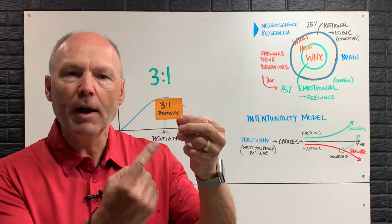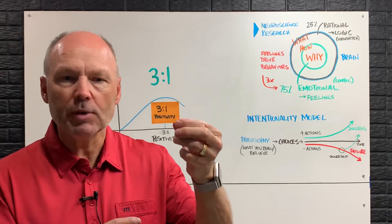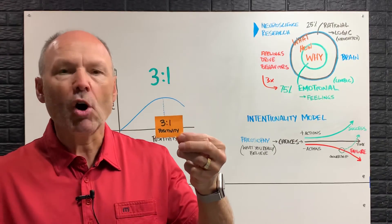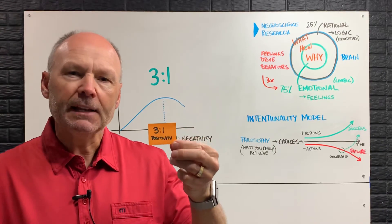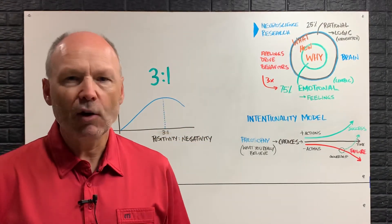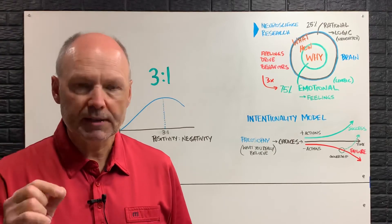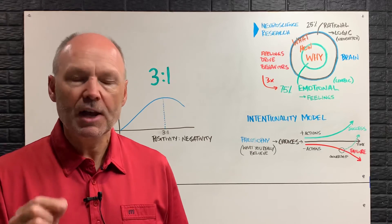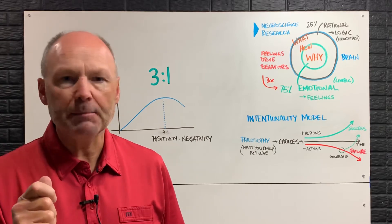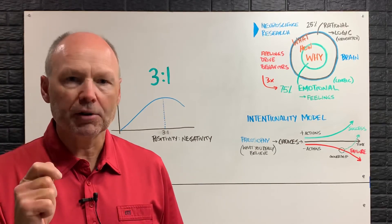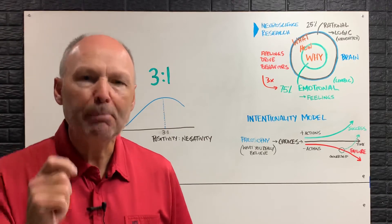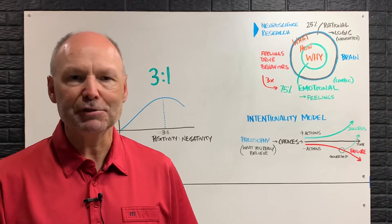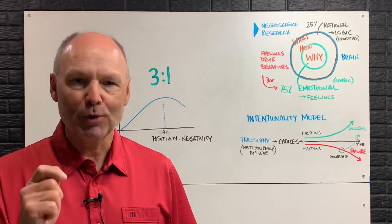Put 3 to 1 positivity on a post-it note and put that by your desk along with the E plus R equals O and along with the other one that I also suggested around grit and how perseverance and passion and resilience will get us through this in better shape and allow us to come out stronger. So today, be positive for yourself, be positive for your family, be positive for your team and make it a great week.